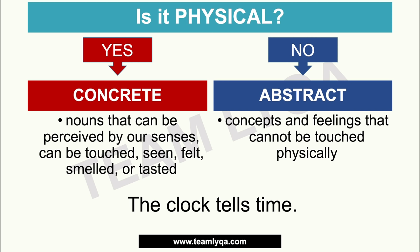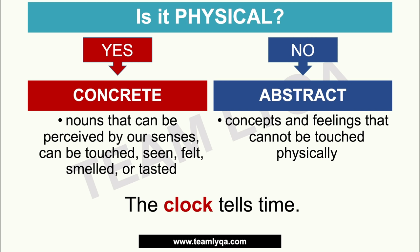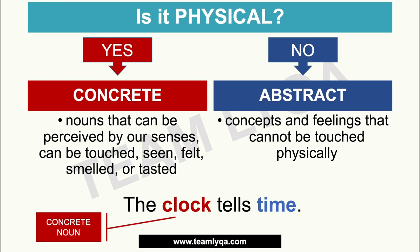In the sentence 'The clock tells time,' the first noun is 'clock.' Because the clock is something you can see, or even hear when it rings, it exists in physical reality — it's a concrete noun. 'Time' is different. Although we have an idea of time, you can't physically hold it. You can't literally feel it — it just passes. You can't catch it or capture it. So 'time' is an abstract noun — it cannot be physically touched.